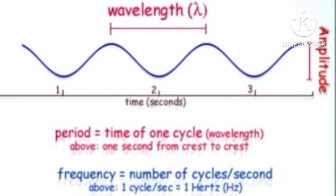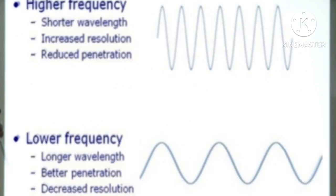Frequency is the number of cycles per second; its unit is hertz. Frequency and wavelength are inversely proportional — when one increases, another decreases. Higher the frequency, higher will be the resolution in expense of penetration.